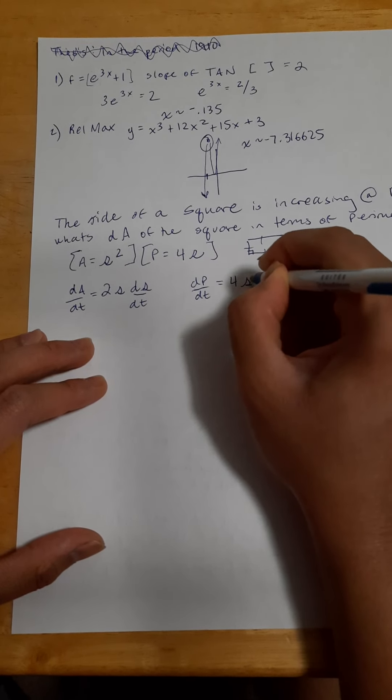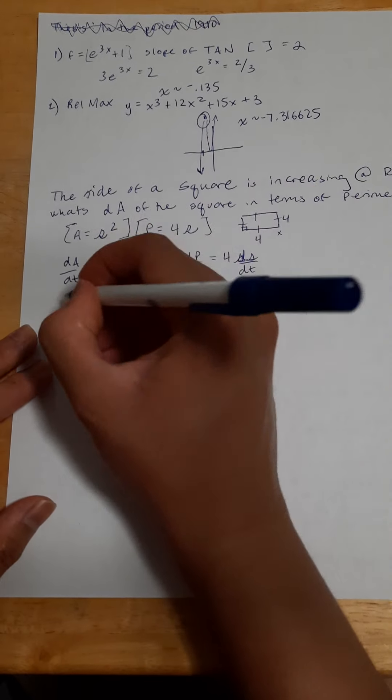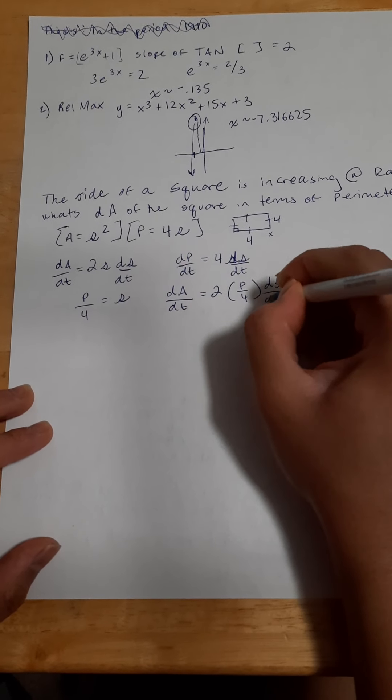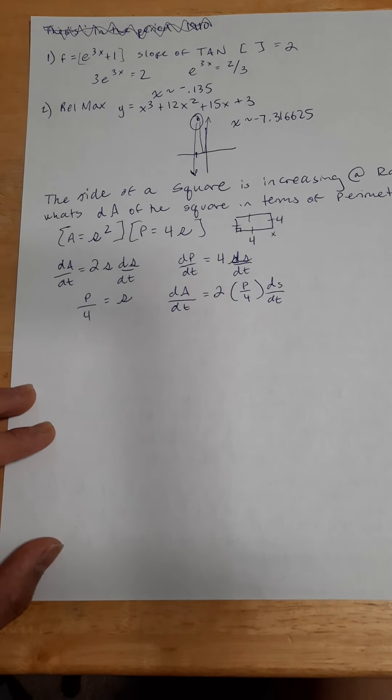Before we go on, we have the equation P = 4s, and we could take that and solve for s. So we get s = P/4. Now we can plug this into our equation for the change in area. So we would get dA/dt = 2 · (P/4) · dS/dt, which becomes 2P/4 = P/2. Then we still have dS/dt on there.